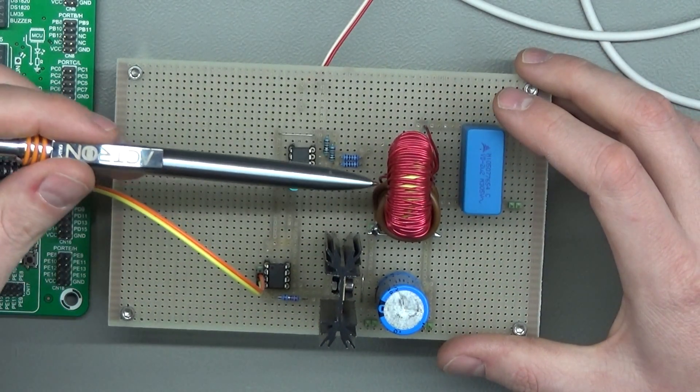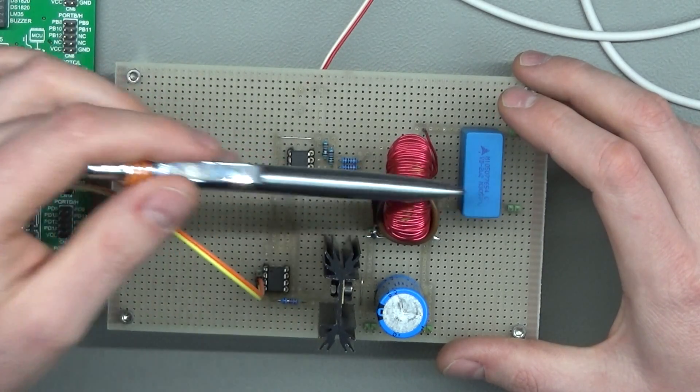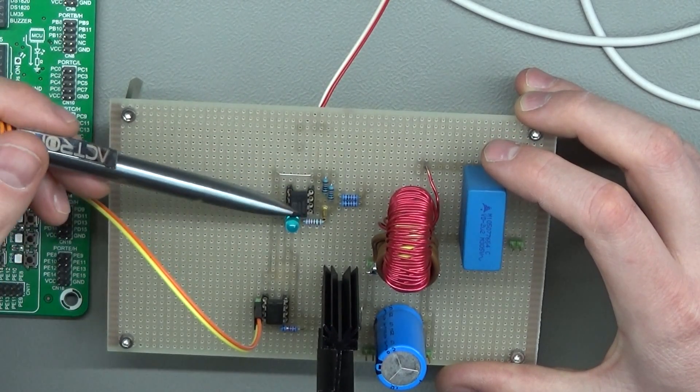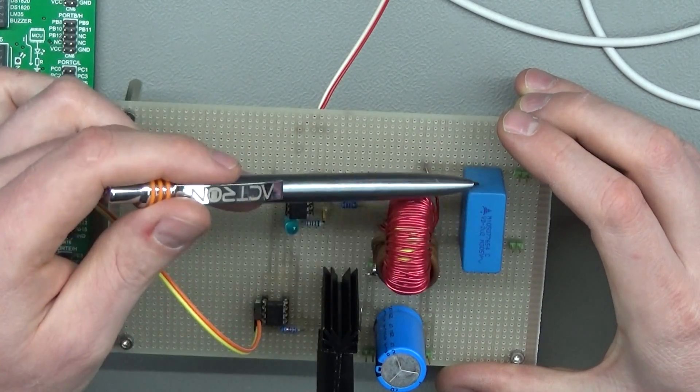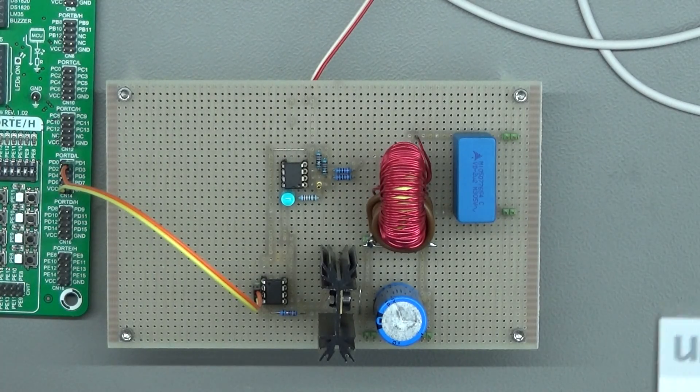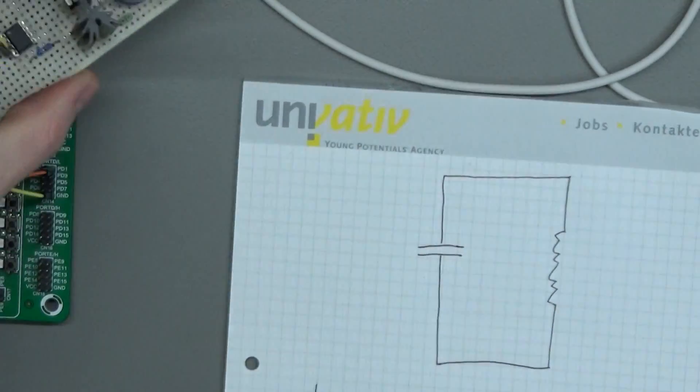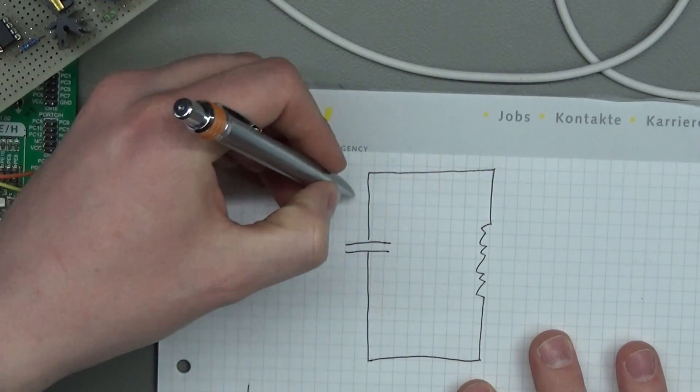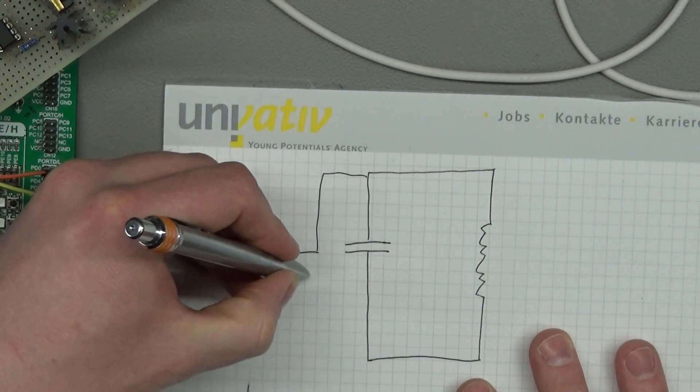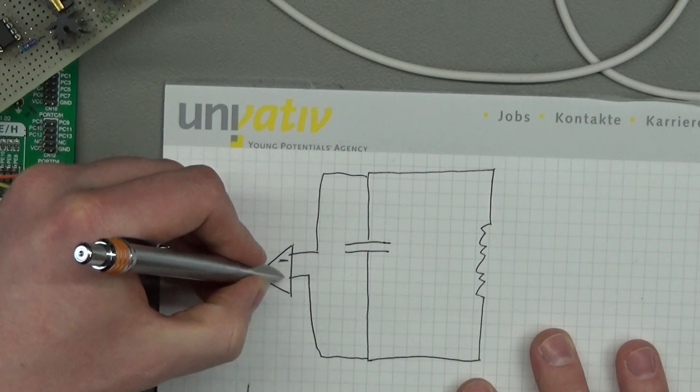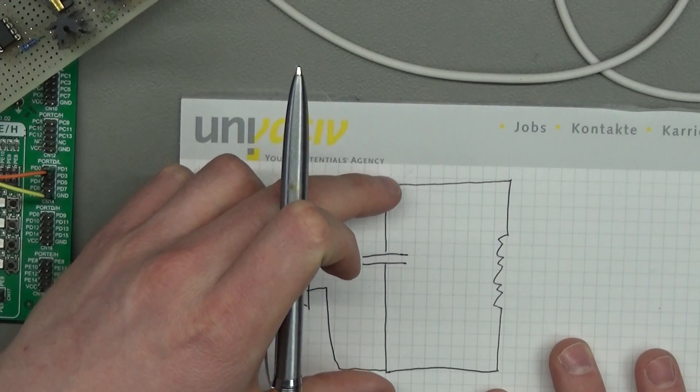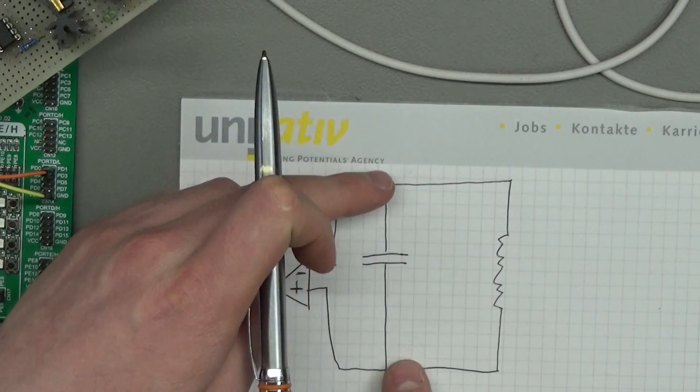And in order to monitor the oscillation of these two components, I connected an operational amplifier between these two pins here, basically like this. I've connected it like that.